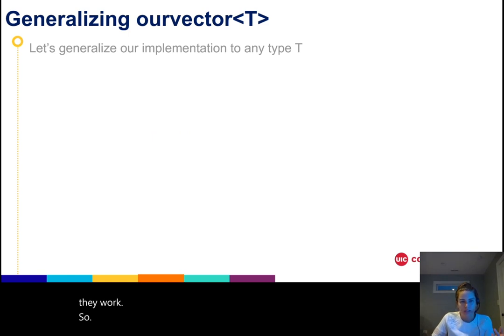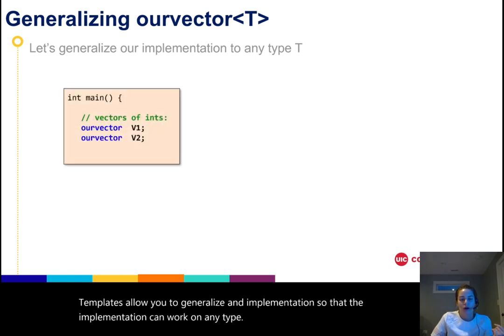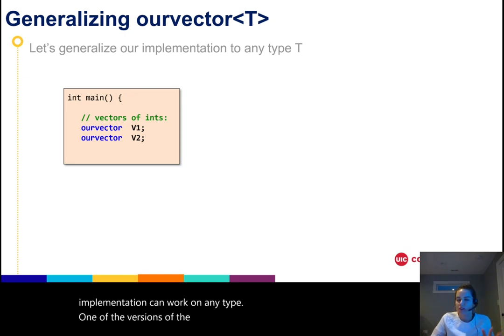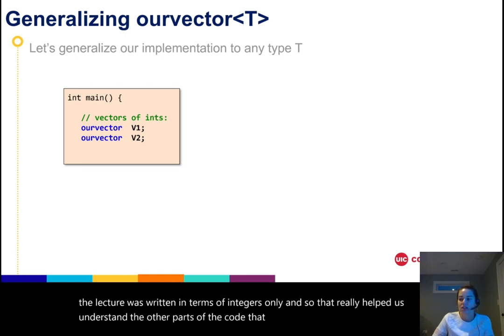Templates allow you to generalize an implementation so that the implementation can work on any type. One of the versions of the ourvector class that we've seen in various portions of the lecture was written in terms of integers only, and that really helped us understand the other parts of the code that we were more interested in understanding at the time.